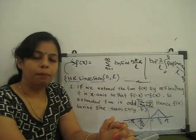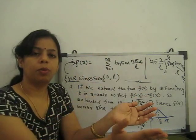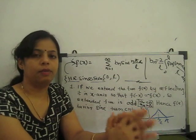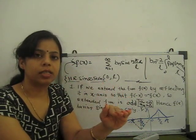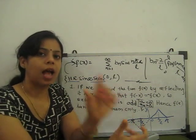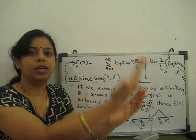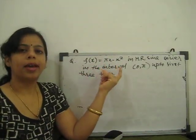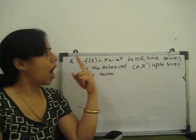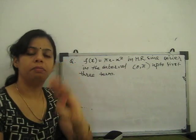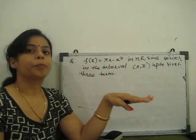In the even and odd function case, a complete interval from minus π to plus π is given and we check whether the function is even or odd. In the half-range case, the function is only given on a half interval (0 to π, 0 to l, etc.) and we choose which axis to reflect about. Problem: expand f(x) = πx − x² in a half-range sine series on the interval 0 to π, up to the first three terms.